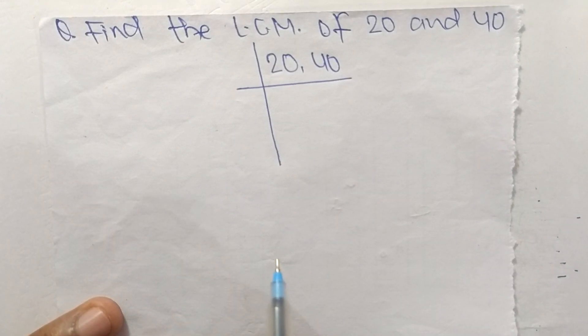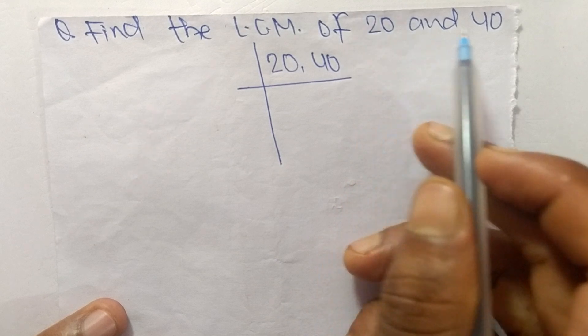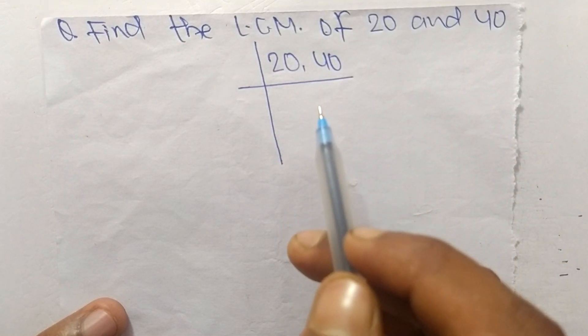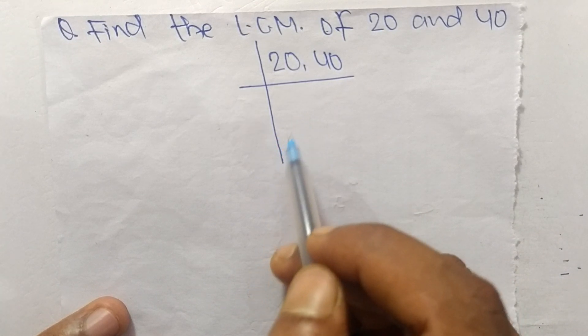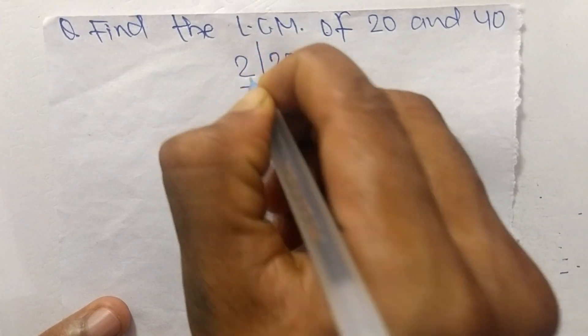So today in this video we shall learn to find the LCM of 20 and 40. To find its LCM, first we choose the lowest number that can exactly divide 20 and 40. So the number is 2.